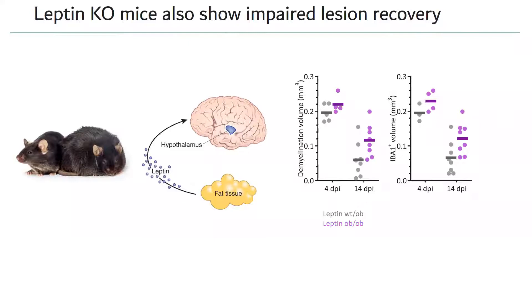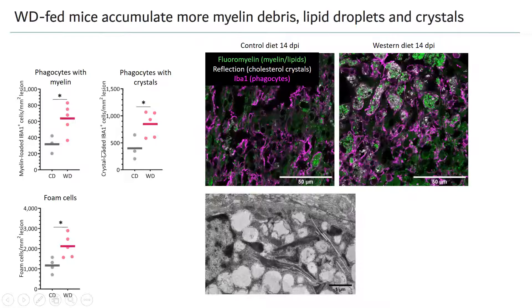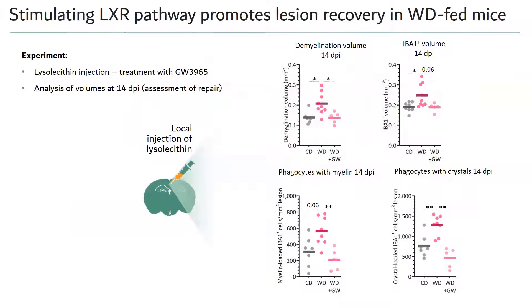Surprisingly, the phenotype in lesions of western-diet-fed mice was very similar to aged mice: accumulation of myelin debris within microglia, evidence of cholesterol overloading with lipid droplets, and crystals on lipid droplet surfaces. As we observed in aged mice, when we added an LXR agonist after lysolecithin lesion induction in western-diet-fed mice, we could fully rescue the phenotype — lesion recovery was improved, phagocytes resolved from lesions, and cholesterol metabolism was improved.